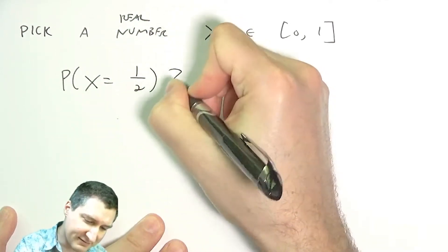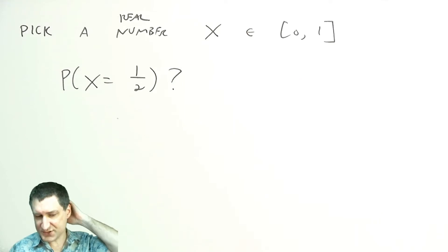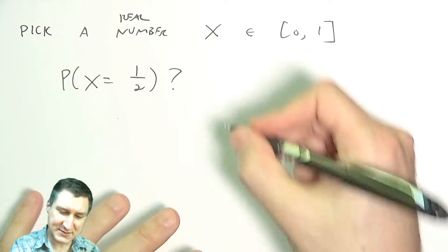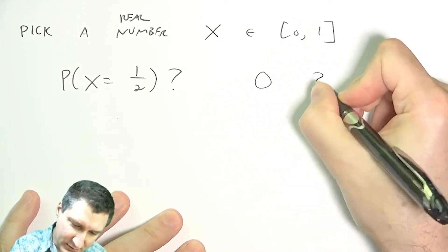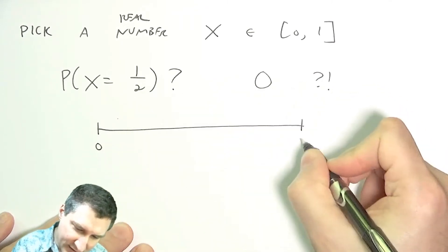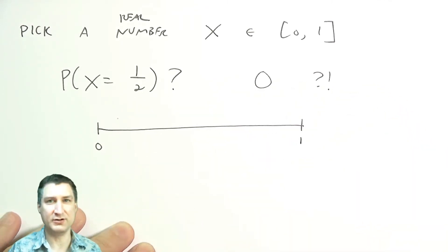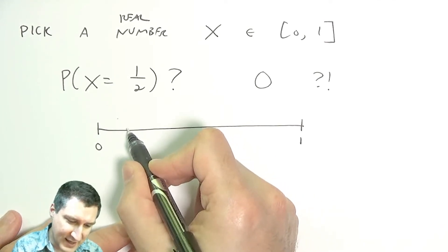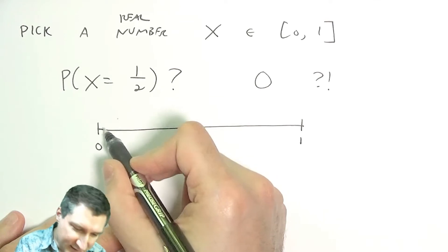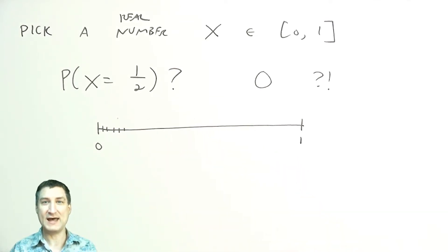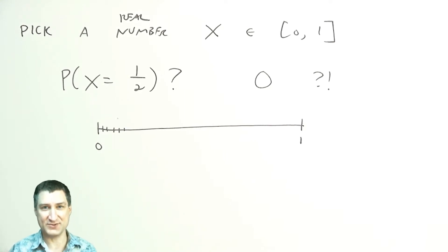Now I ask: what's the probability that X equals one-half? If you think about it, that number has to be zero, and that seems a little counterintuitive. On the number line between zero and one there are an infinite number of real numbers, and if any of them had an actual nonzero probability, it would immediately become true that if I add up all those probabilities I get a number greater than one, which would violate the axioms of probability.